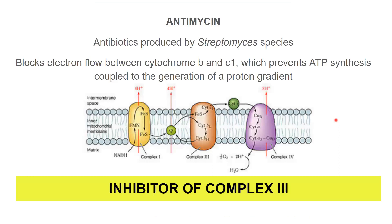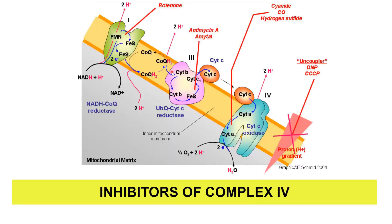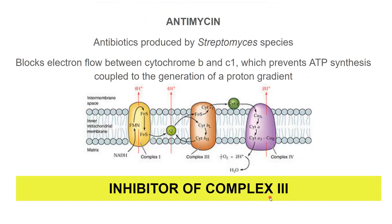Next is antimycin, an inhibitor of complex three. In complex three, electrons transferred from complex one via coenzyme Q are taken up by cytochrome B, passed to cytochrome C1, then to cytochrome C, which finally passes electrons to oxygen. Antimycin, an antibiotic from Streptomyces species, blocks electron flow between cytochrome B and C1. If this transfer does not occur, there is no pumping of protons to the membrane and subsequently no generation of ATP.